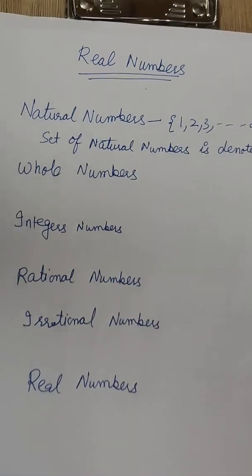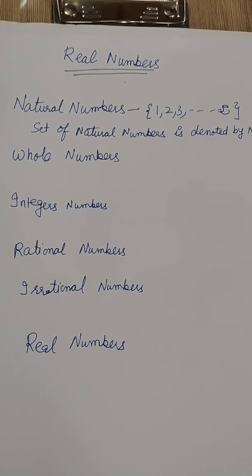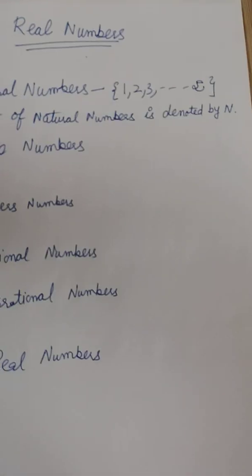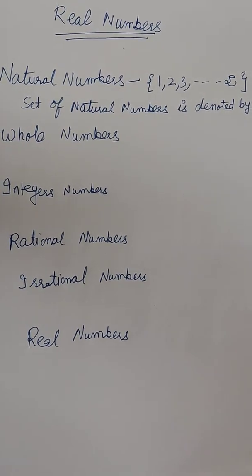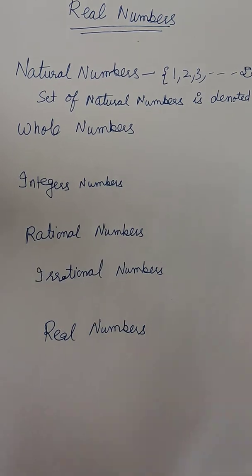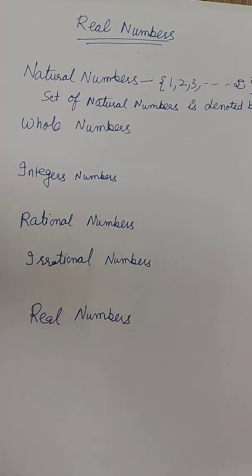And set of natural numbers is denoted by capital N. The set is always denoted by the capital letter, never ever with the small. Small letters we denote for the members of the set. Like when we do algebra, this number is x, suppose this number is y. At that time we take small, because these numbers are the part of the biggest set, not the set.